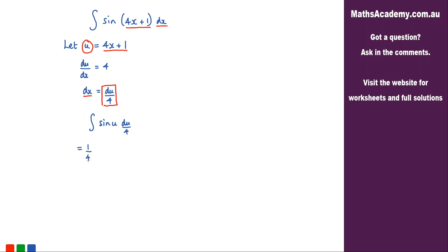We've got 1 over 4. We've got the integral of sine of u with respect to u. And the integral of sine is negative cosine. So what we've got is negative 1 over 4 cosine of u.